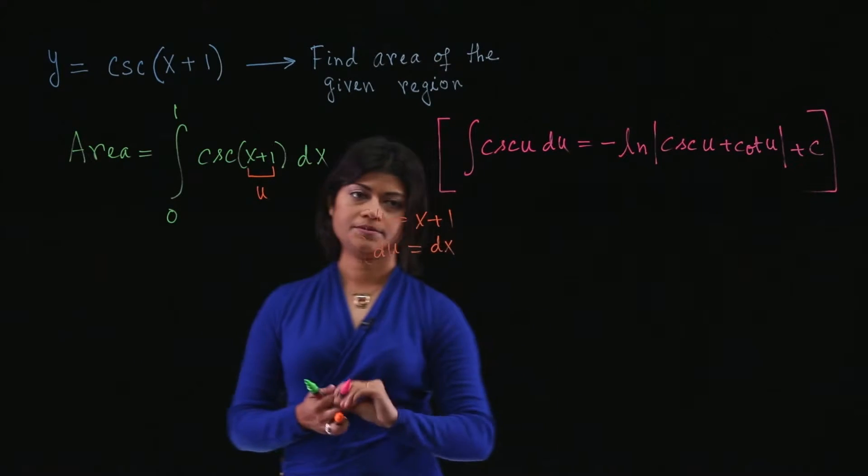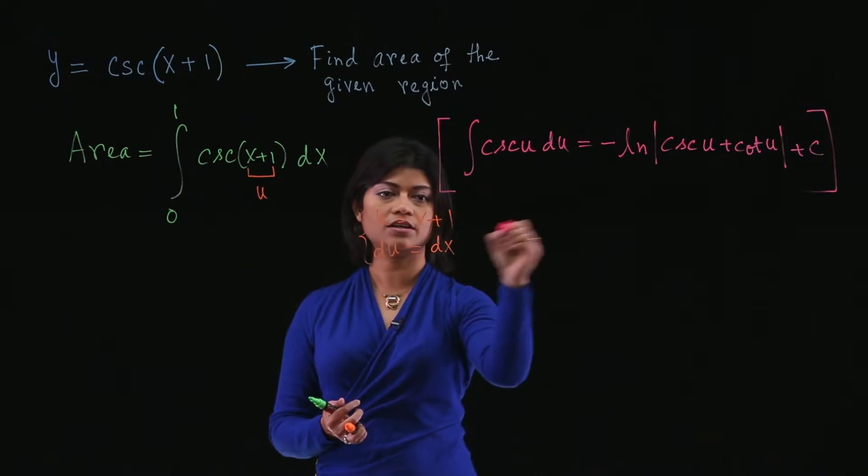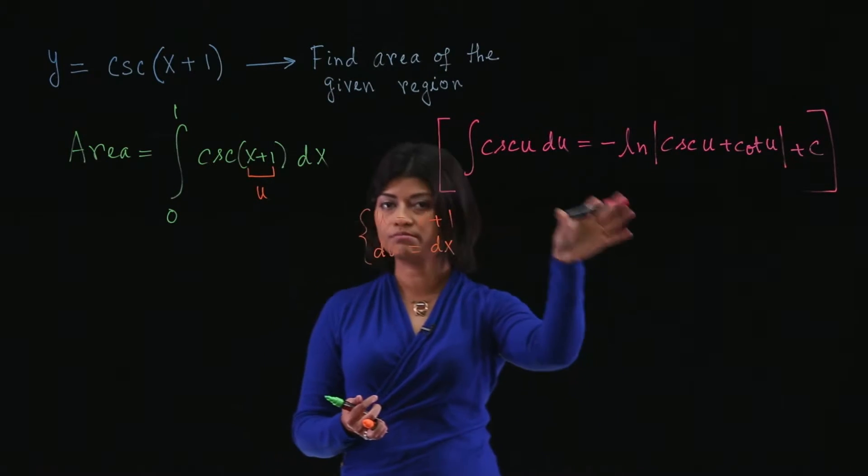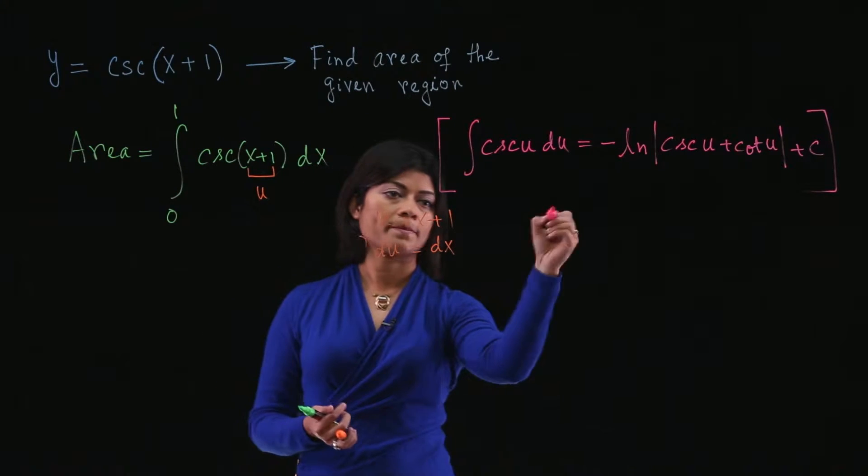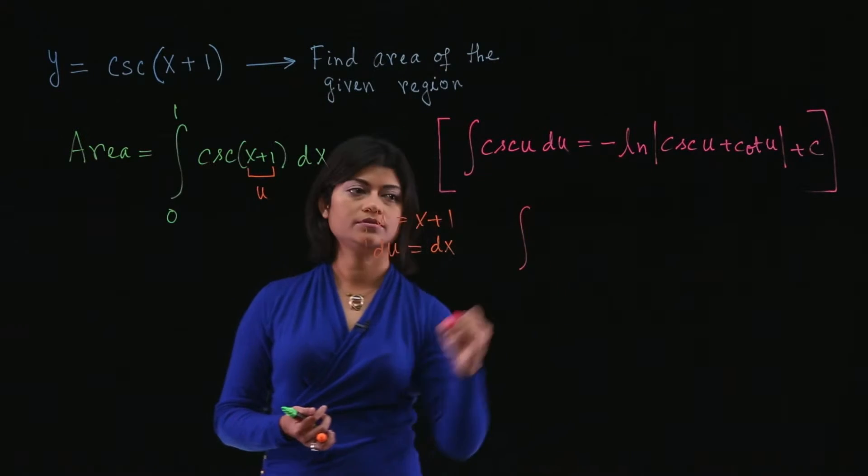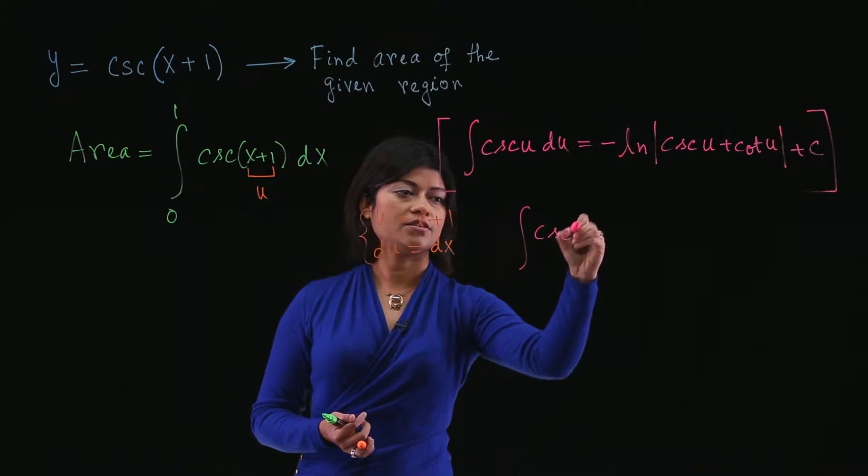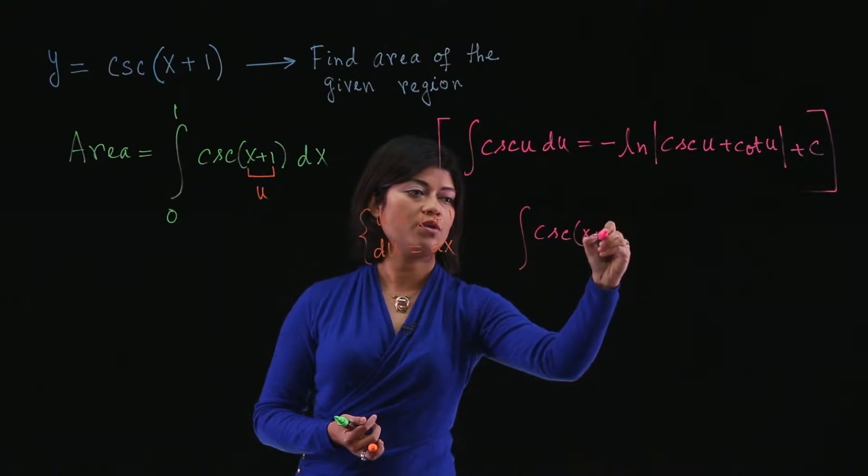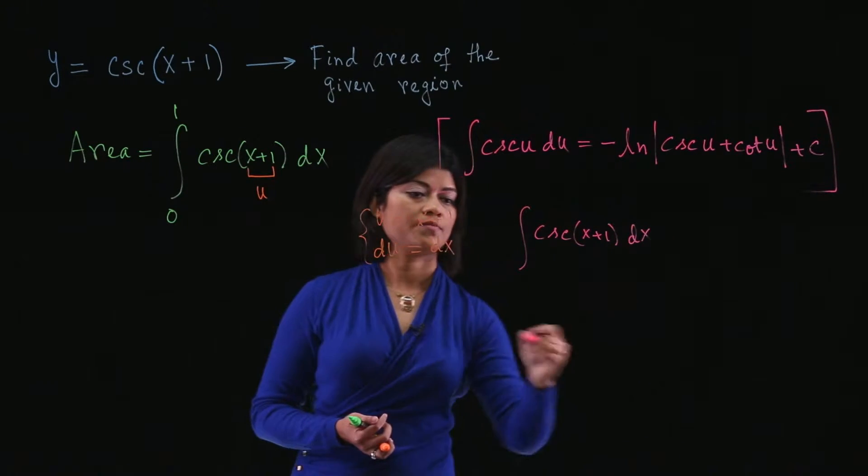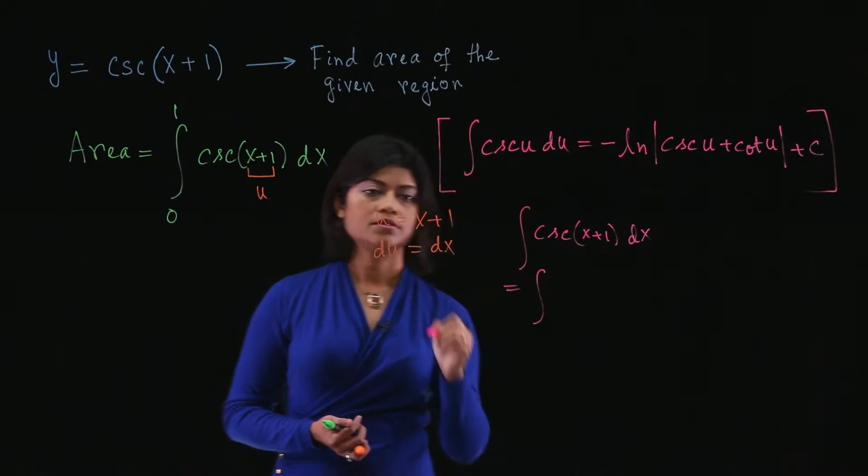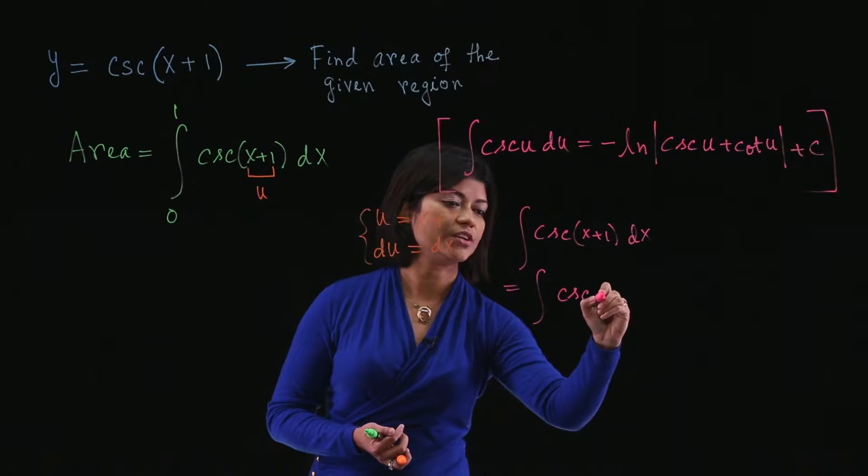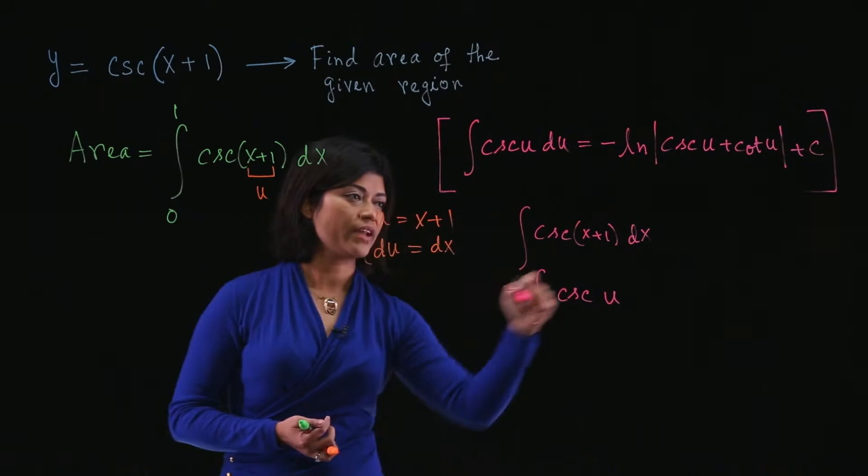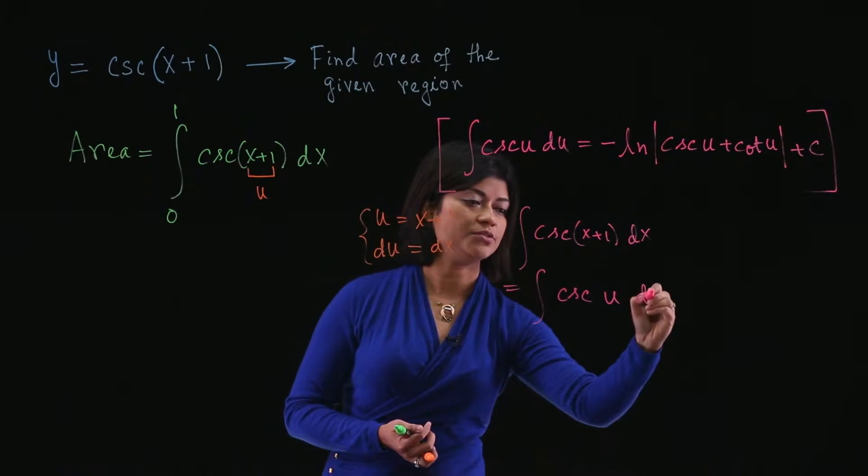So if you do that, let's solve the integral using this u substitution right here. And let's solve the indefinite integral. OK, so we have integral cosecant of x plus 1 dx. All right. So I'm plugging in u for x plus 1, so it becomes cosecant of u. And dx is just du.